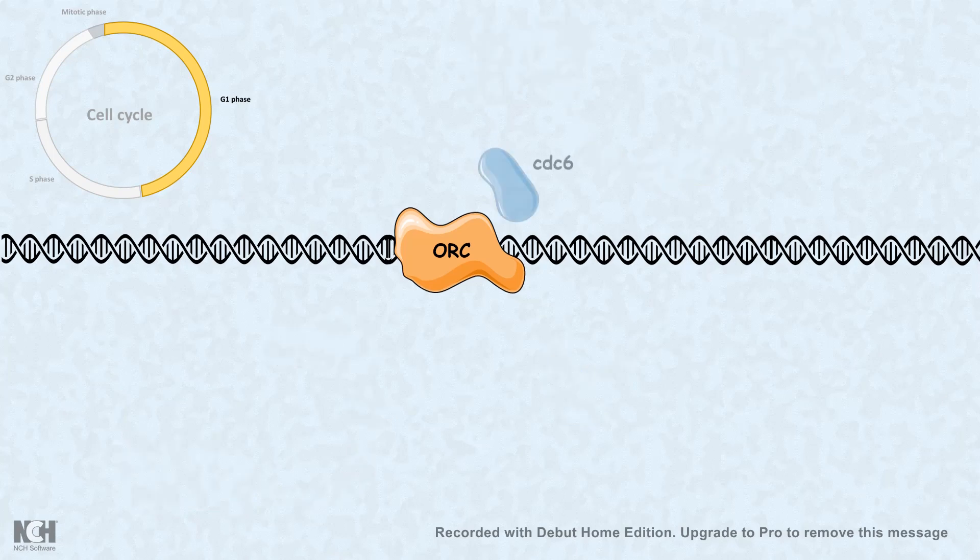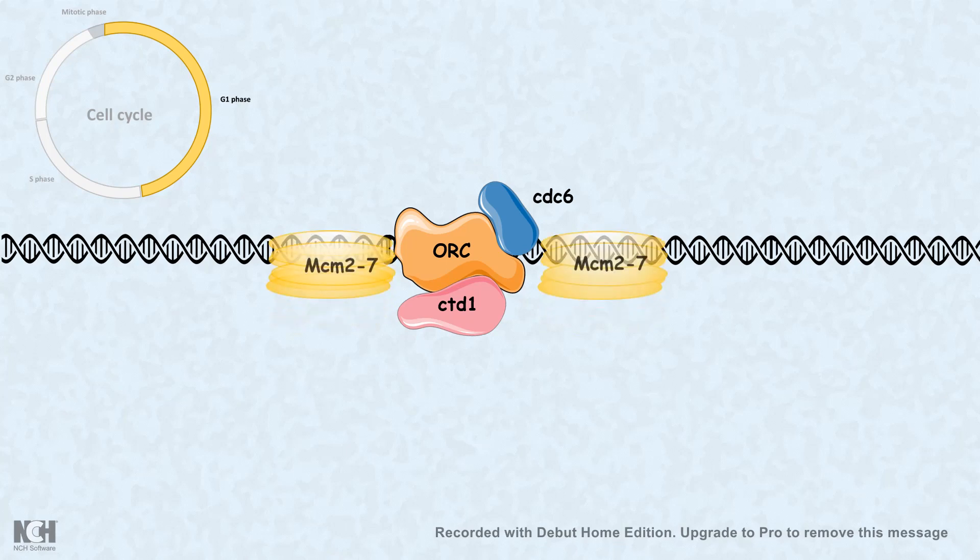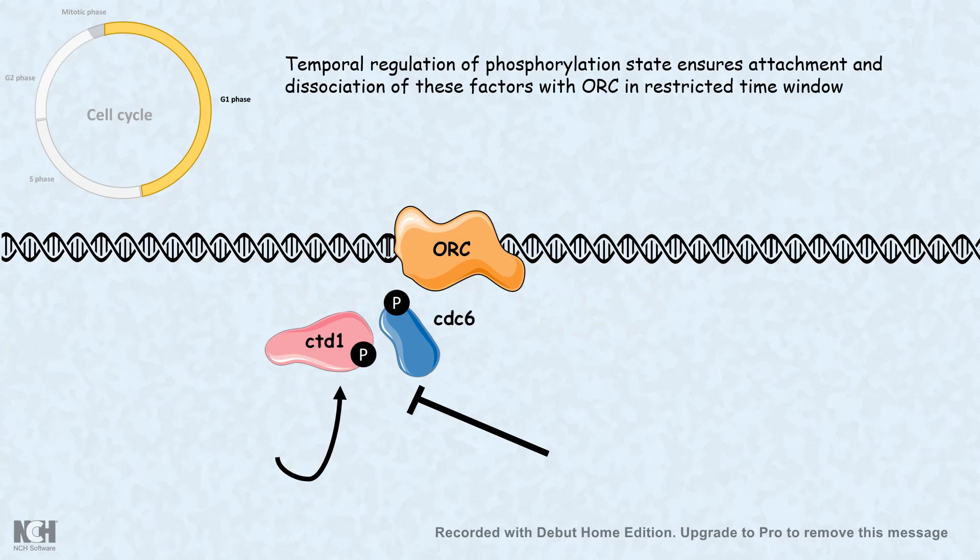That is why in S phase, assembly of these triggering factors can take place in the origin of replication, and the origin can fire and start a new round of replication in the S phase. That is how the strict balance between phosphorylation and dephosphorylation by cyclin B and CDK1 complex ensures that replication is restricted to a specific time window.